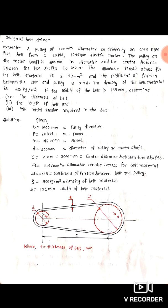A pulley of 1000 mm diameter is driven by an open type flat belt from a 20 kilowatt, 1440 rpm electric motor. The pulley on the motor shaft is 300 mm in diameter and the center distance between the two shafts is 2 meters. The allowable tensile stress for the belt material is 2 Newton per mm square and the coefficient of friction between the belt and pulley is 0.28. The density of the belt material is 900 kilogram per meter cube.